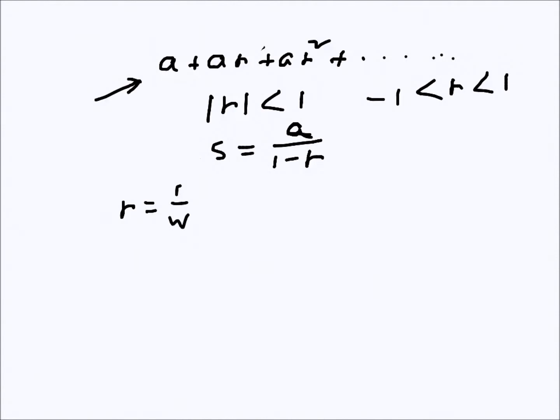The second one says common ratio is 1/w and limiting sum s is 1/(1-w), so we need to find what is a. We know s = a/(1-r), so we'll work through this.